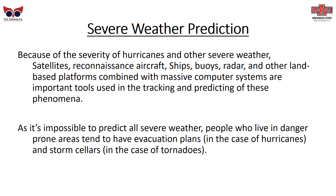Severe weather prediction is very important because of the severity of hurricanes, tornadoes, floods, and similar events. Satellites, reconnaissance aircraft, ships, buoys, radar, land-based platforms, and massive computer systems are all used to track and predict these phenomena. As it's impossible to predict all severe weather, people who live in danger-prone areas tend to have evacuation plans in the case of hurricanes, and storm cellars in the case of tornadoes.